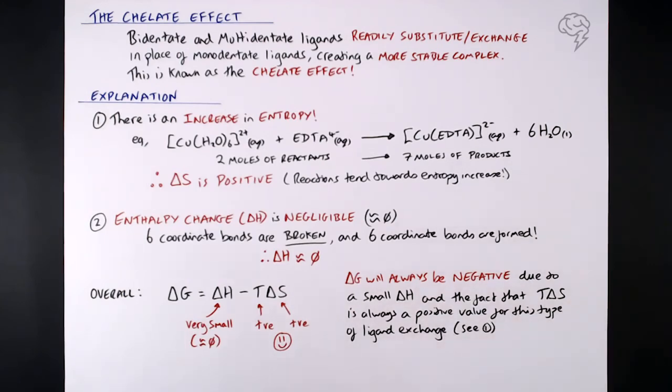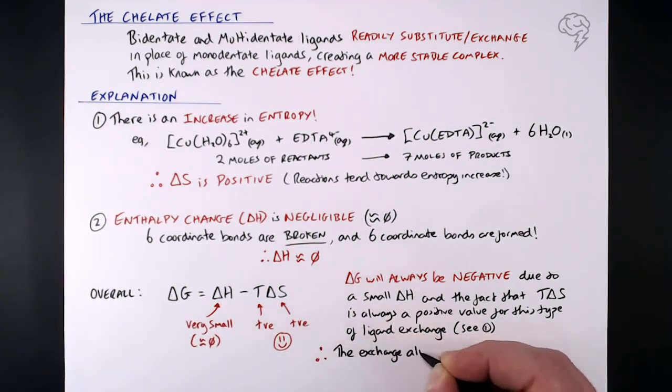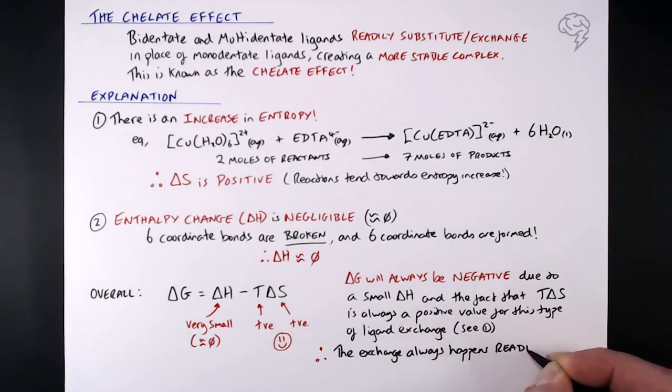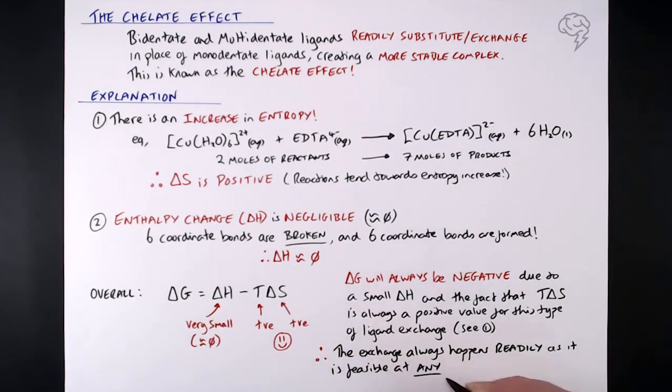So delta G, we can safely say, will always be negative due to the fact we've got a very small delta H exchange, and the fact that T delta S is always going to be a positive number. So you're taking away a positive number from what's basically zero. So that's always positive for this type of ligand exchange, as I said, because you're always going to get an increase in entropy. Final statement. This final statement states that the exchange always happens readily, as it's feasible at any temperature. So even if you've got a really low temperature in terms of Kelvin, it doesn't matter. You're dealing with such a small delta H, your overall answer is going to be negative in terms of delta G.